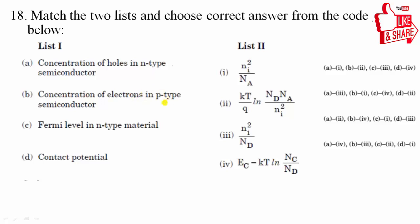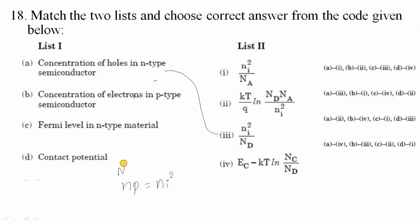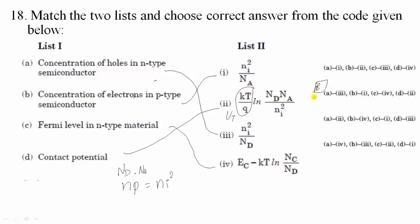Eighteenth question — match the following. Concentration of holes in N-type semiconductor: Ni²/Nd (from mass action law Np = Ni²). Concentration of electrons in P-type semiconductor: Ni²/Na. Fermi level in N-type material: EC − KT·ln(NC/ND). Contact potential: (KT/Q)·ln(Nd·Na/Ni²), also expressed as VT. Option B is correct.